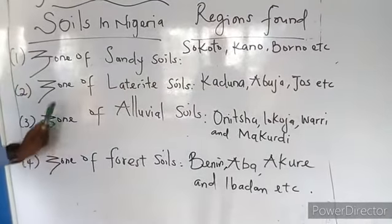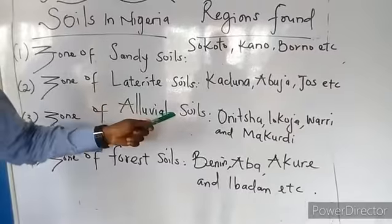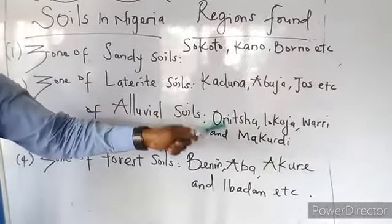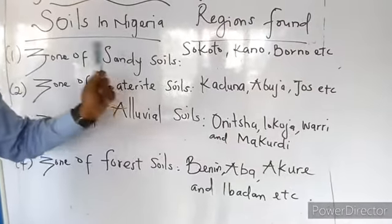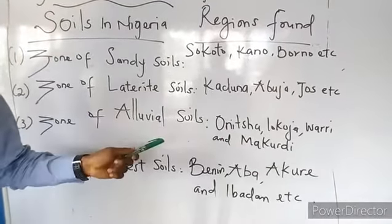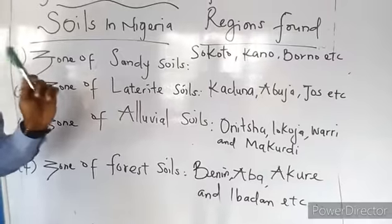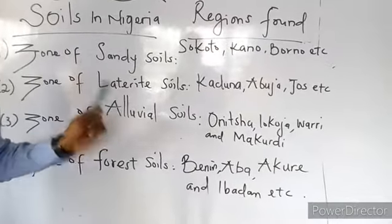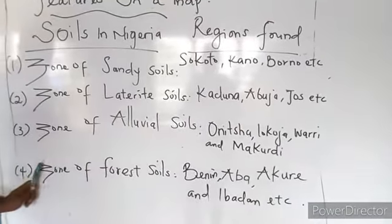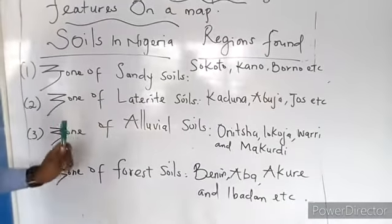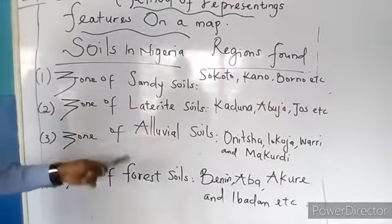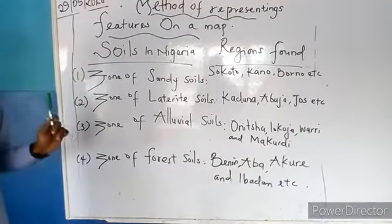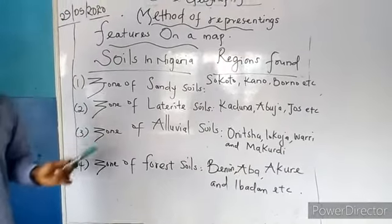Zone of alubia soil — they are found in Onicha, Bokoja, Wori, and Makodi. Other regions are found also, but these are the major ones. Zone of forest soil — they are mainly found in Bini, Abba, Akure, and Ibaga.